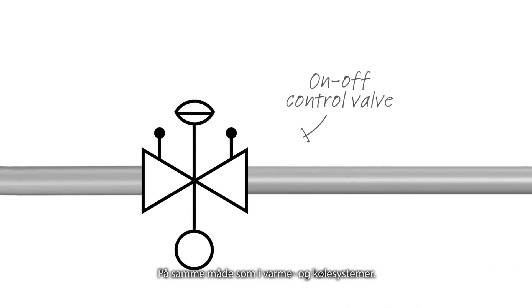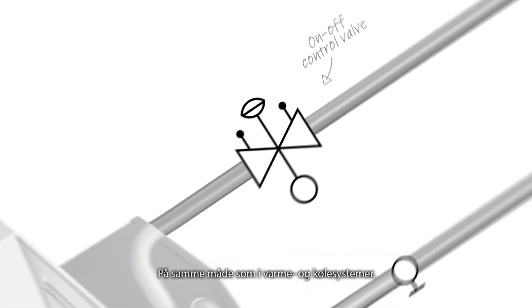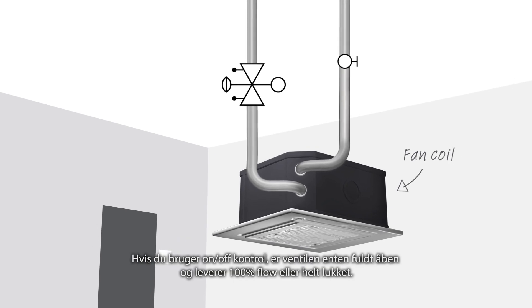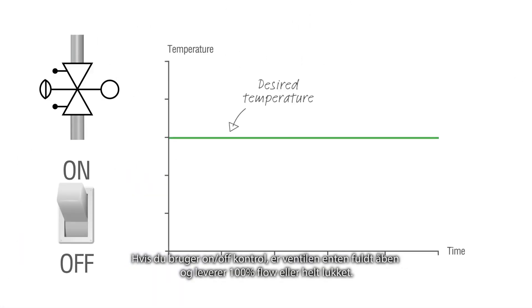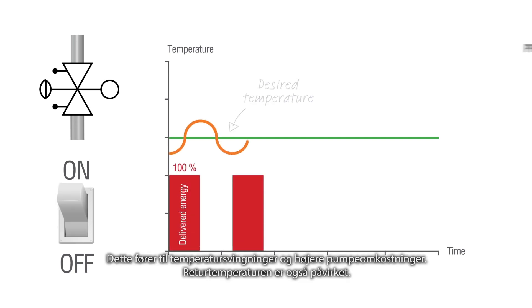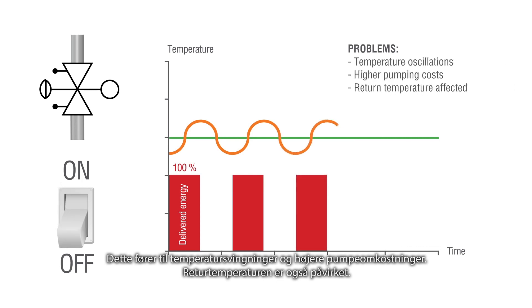Similarly in heating and cooling systems, if you use on-off control, the valve is either fully open and delivers 100% flow or fully shut. This leads to temperature oscillations and higher pumping costs, and the return temperature is also affected.